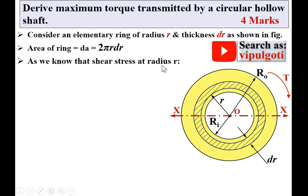As we know, the shear stress at radius r equals τ/Ro times small radius r. Let's say this is equation number 1.